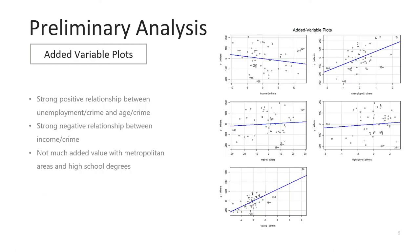From the added variable plots we see a negative relationship with income, which is to be expected, as well as a strong positive relationship with unemployment and age. Metropolitan areas and high school degrees do have a slight positive relationship, but not nearly as significant. The almost horizontal line indicates that these predictors do not add much information beyond what is already in the model. We will keep this in mind as we move forward with the model building process.